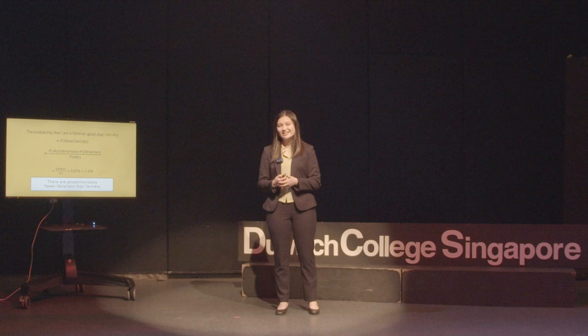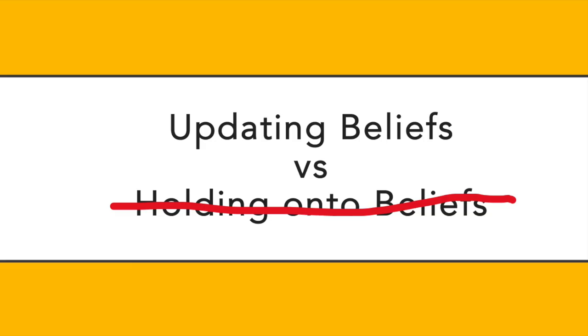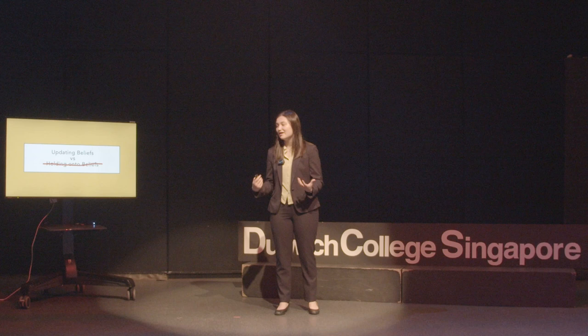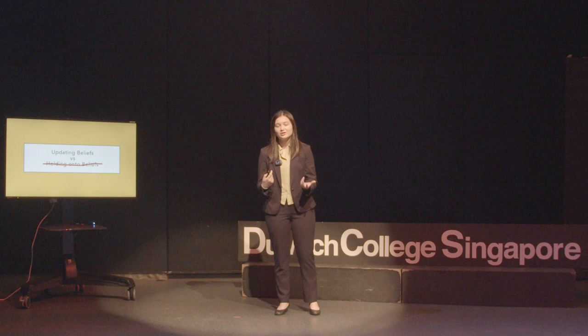This is basically the central idea behind Bayes theorem. Knowing this, we can say that Bayes theorem also shows that updating your beliefs is much better than holding on to them. An example of holding on to beliefs is thinking that all librarians are shy and nerdy — instead, you should be updating your beliefs with information you already know.